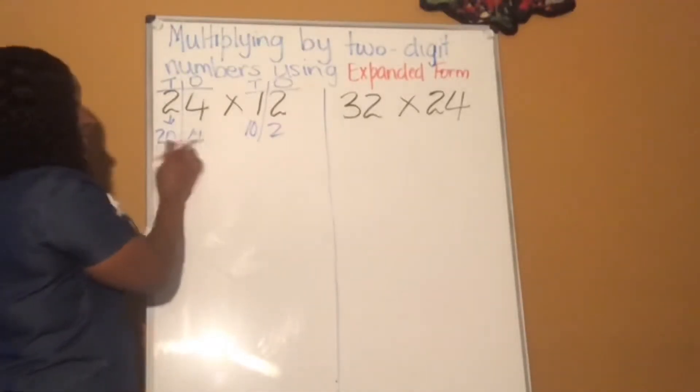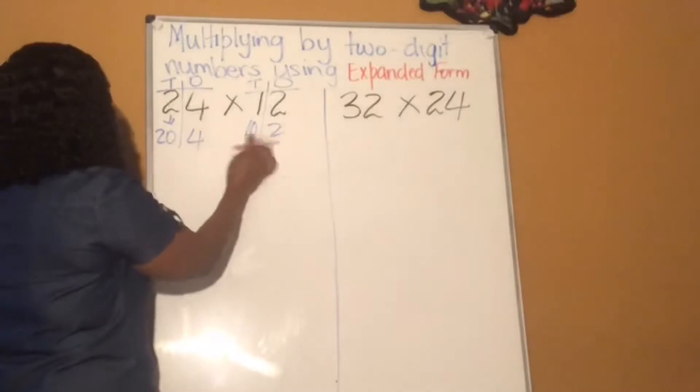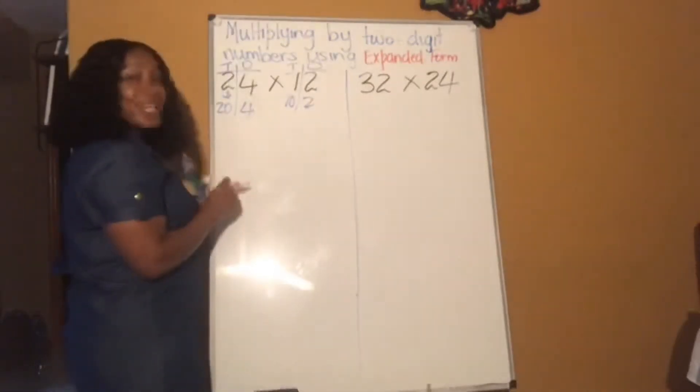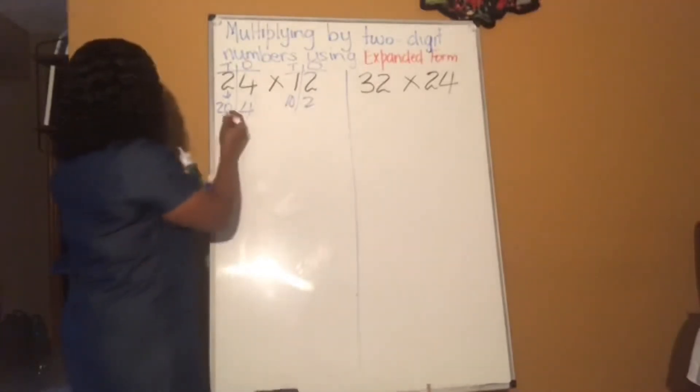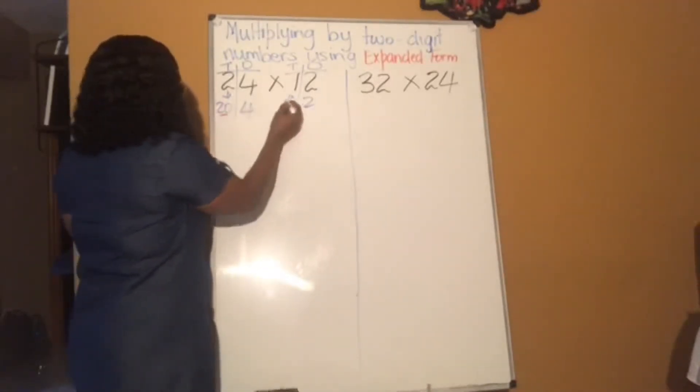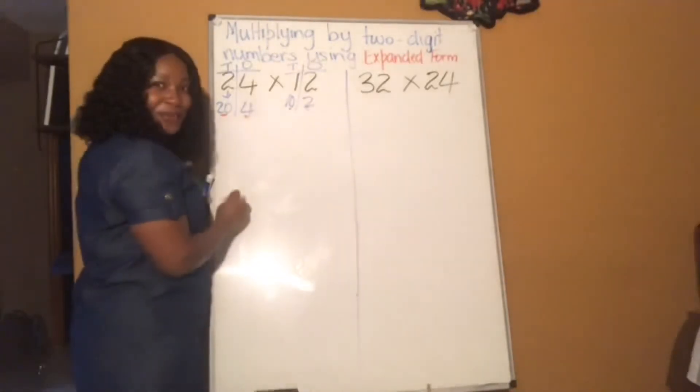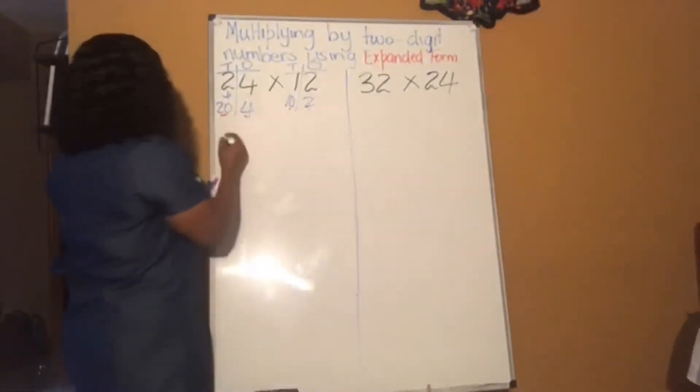We have to multiply these two by these two. So it's going to be a little longer going across because we have to multiply 20 by 10, then four by 10, then 20 by two, and four by two. But we can do it. So let's go.